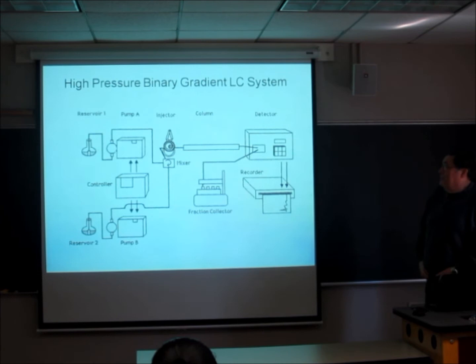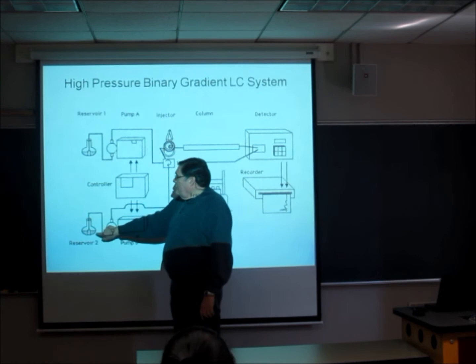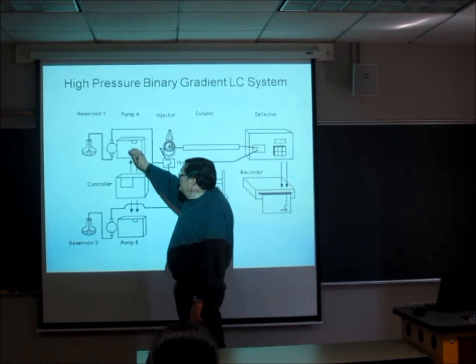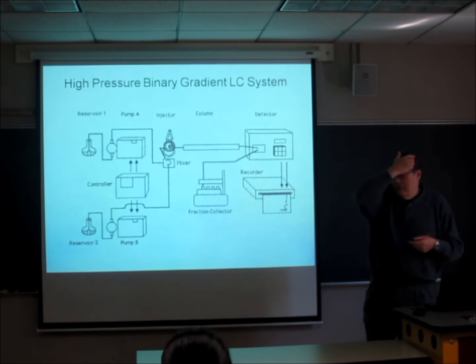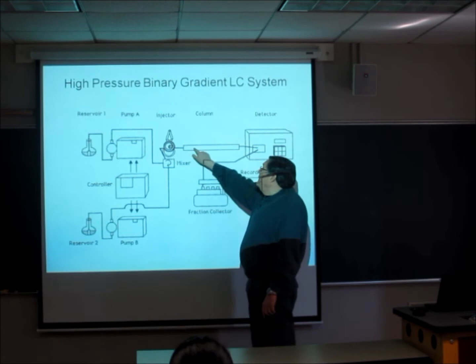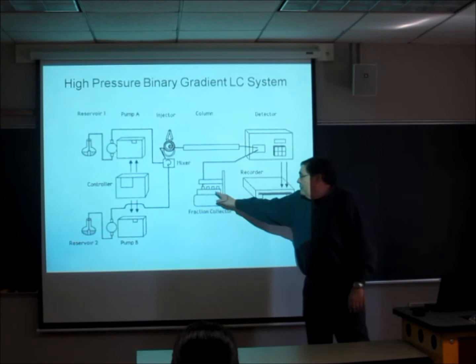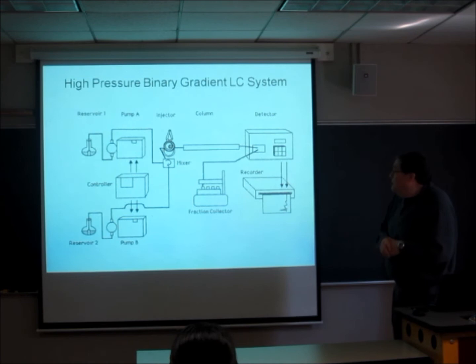Let's move away from isocratic separations to gradient separations. Here we have two solvents, and we control the mixture of the solvents through this controller unit. So we change the rate at which the pumps pump. The streams come together in this thing called a mixer. The streams come together and they have to be mixed up intimately. Then that solution goes and picks up the material from the injector, and the separation occurs on the column. We can collect the fraction holding each peak if we want to, or groups of peaks in test tubes.